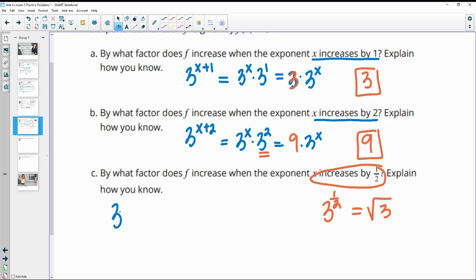But if I write it out like the others, it'd be 3^(x+1/2), which would be 3^x times 3^(1/2). So here's your original and here's your extra factor. So it's increasing by 3^(1/2) or square root of 3.